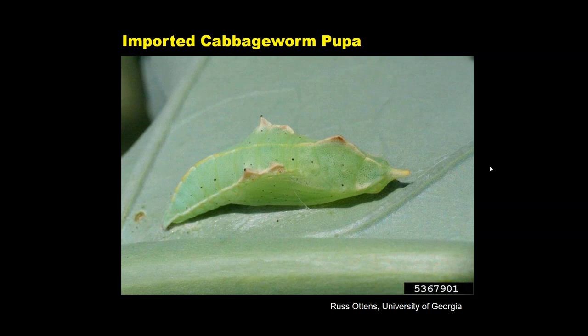After the caterpillar reaches full development it forms a pupa that is unique in shape, with spike-like prominences around the edges. When recently formed it is greenish in color. As the butterfly develops within and gets ready to emerge, you can actually see the faint wing colors through the surface of the pupa — you can make out the yellow or whitish wings, indicating it's close to emerging.